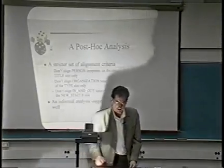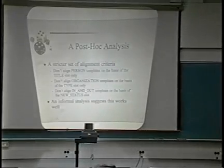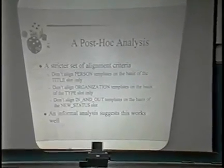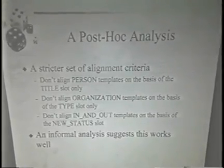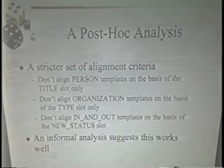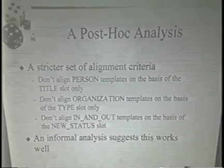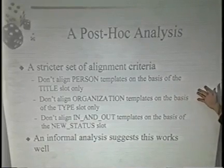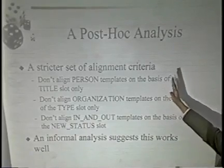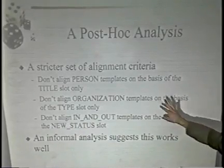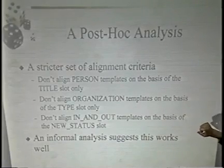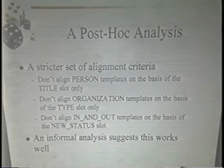The squaring algorithm did allow you some flexibility to design a stricter alignment criterion. It's just that nobody tried it, because everybody is going to use the criterion in their development that matches what they're going to get evaluated against. But let's try this — just make some simple changes, so that if you're going to align a person template, you can't do it just on the basis of matching 'mister.' Similarly, an organization-type company isn't enough to align organization templates and so forth.